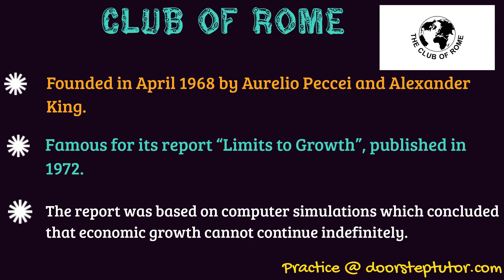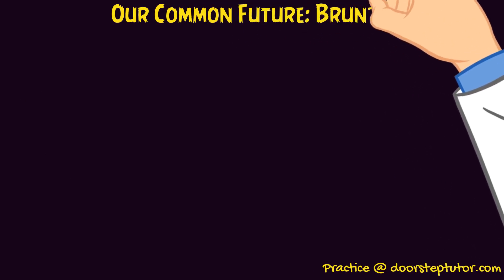The researchers in the report came to the following conclusions: Global industrial output per capita will reach a peak around 2008 and will be followed by a rapid decline. Global food per capita will reach a peak around 2020 and then decline. Global services per capita will reach a peak around 2020 and then decline. Global population will reach a peak in 2030 and will be followed by a rapid decline. Global growth trends existing in 1972 could be altered so that sustainable ecological and economic stability could be achieved.